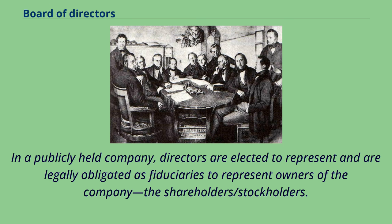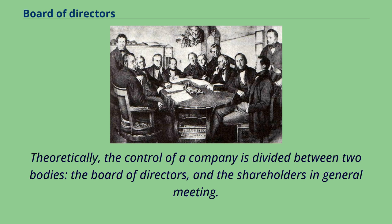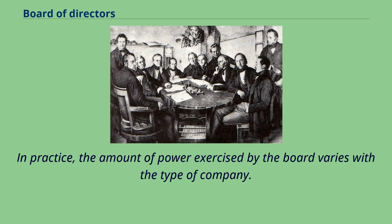In a publicly held company, directors are elected to represent and are legally obligated as fiduciaries to represent owners of the company, the shareholders. In this capacity they establish policies and make decisions on issues such as whether there is a dividend and how much it is, stock options distributed to employees, and the hiring, firing, and compensation of upper management. Theoretically, the control of a company is divided between two bodies: the board of directors and the shareholders in general meeting. In practice, the amount of power exercised by the board varies with the type of company.